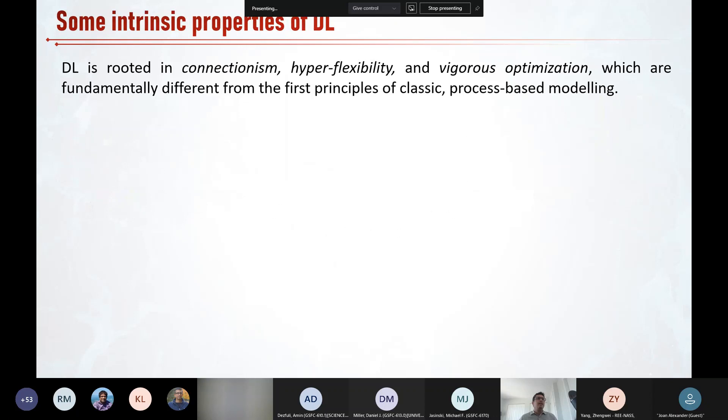To compare, let's look more under the hood of deep learning. Deep learning is rooted in connectionism, hyper flexibility, and vigorous optimization, which are fundamentally different from the guiding principles of classic process based modeling. These differences are often ignored, but I think they must be considered at the heart of modeling efforts that use deep learning in earth and environmental sciences.